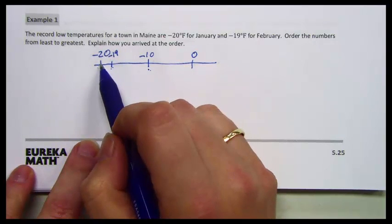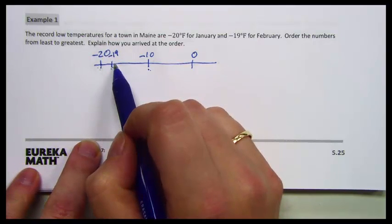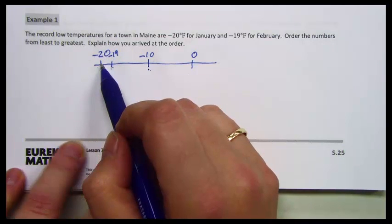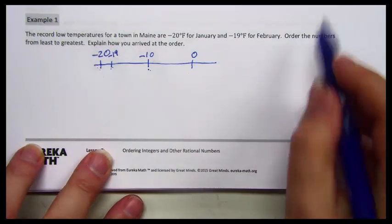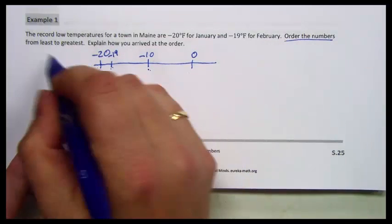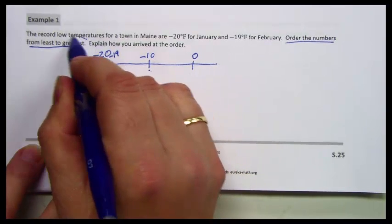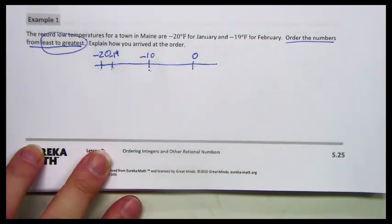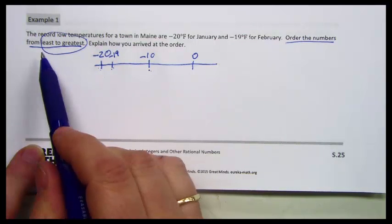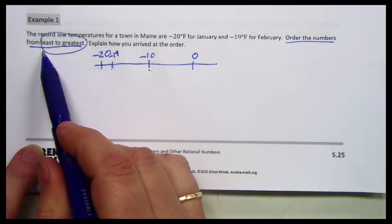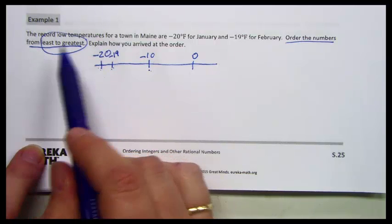Negative 20 is smaller than negative 19 because it is to the left. So if I wanted to order my numbers from least to greatest, you really have to pay attention to whether you want the smallest number first, the least number, or the largest number first, the greatest number.